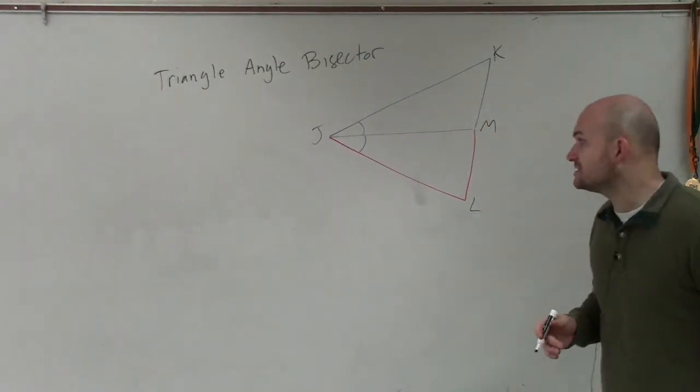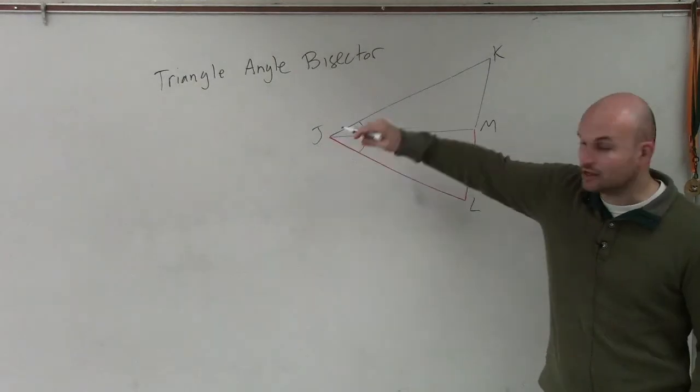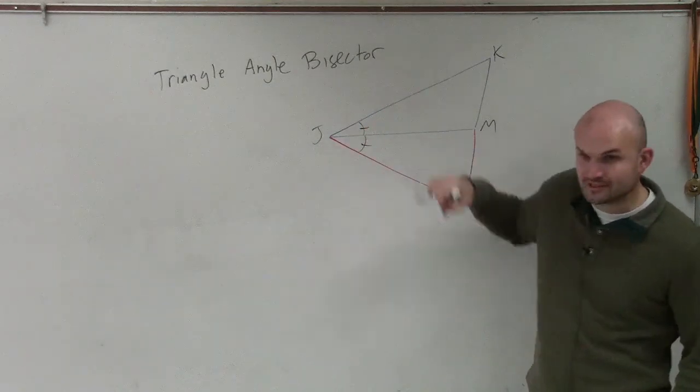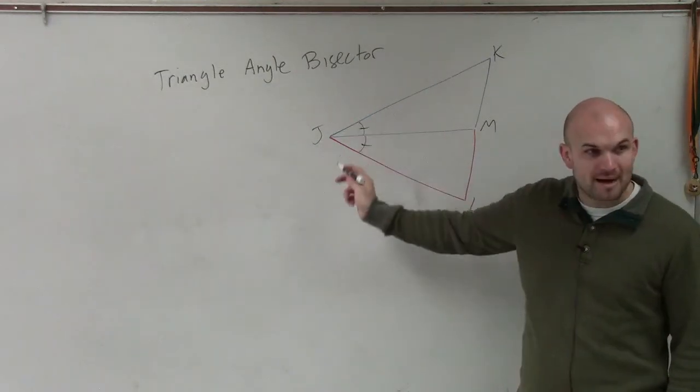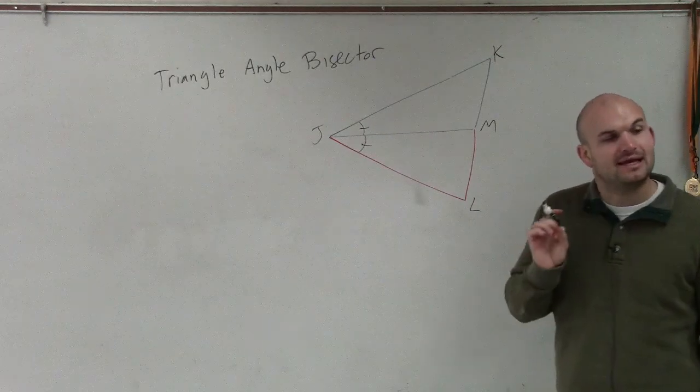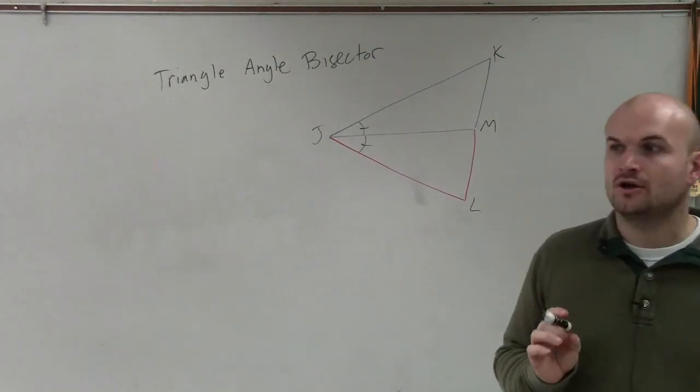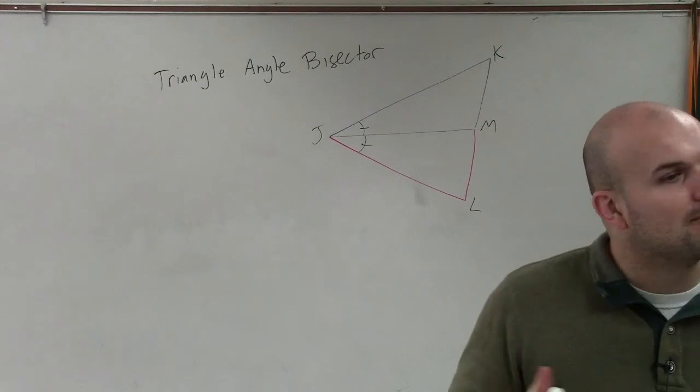And what the triangle angle bisector tells us is if we have a triangle and we have an angle bisector, this line bisects the angle. If we have an angle bisector, we actually have lengths that are proportional to one another.